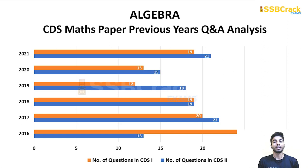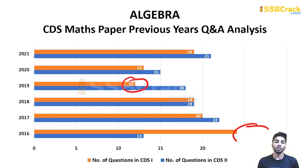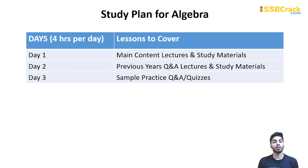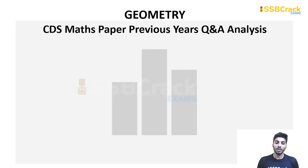The first topic is Algebra. The maximum number of questions asked from this topic is 26, analyzing data from 2016 to 2021, and the minimum is 12. So it is a very scoring topic. You have to give four hours per day. Day one: cover all the main content lectures. Day two: cover all previous year questions. Day three: cover sample practice questions and quizzes.